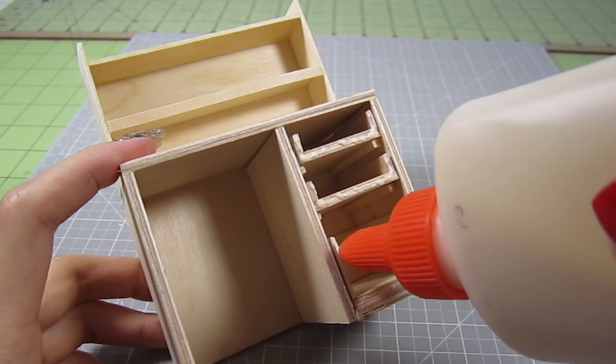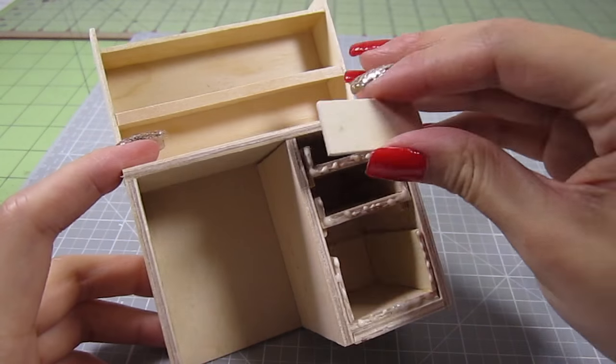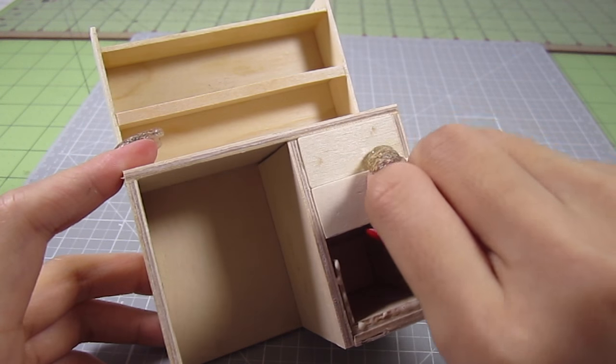Now all you need to do is add glue and position the drawer fronts into place. Adding them on now when the drawers are already inside the desk will ensure you get a really seamless look.